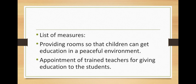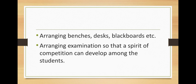After that, list of measures — it carries 4 marks, so you have to write 4 points. First point: Providing rooms so that children can get education in a peaceful environment. Second: Appointment of trained teachers for giving education to the students. Third: Arranging benches, desks, blackboards, etc. And the last point: Arranging examinations so that a spirit of competition can develop among the students. That is 4 marks.